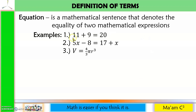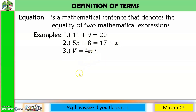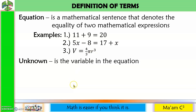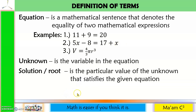Examples: the first is a numerical equation where all terms are constants. Numbers two and three are algebraic equations containing variables. The unknown is the variable in the equation — in number two, it is the variable x. The solution or root is the particular value of the unknown that satisfies the given equation; after solving, the value of x is called the solution or root.